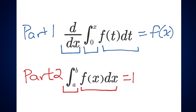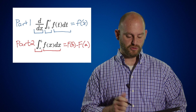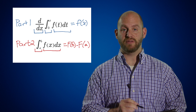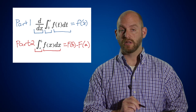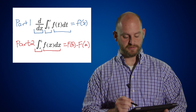The way we write this is that we would be finding F of b minus F of a. We use a capital F to denote the fact that we have integrated this function, little f of x.